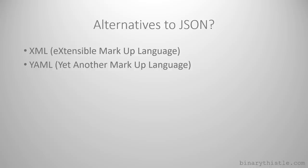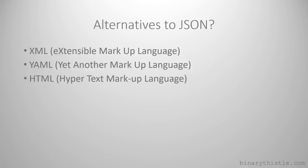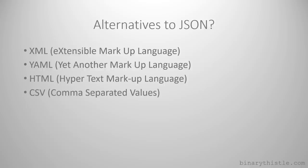YAML - Yet Another Markup Language - I've really only come across it being used as a configuration file. I believe it's a superset of JSON, but if you want to read up more on that, go for your life. I've also put in HTML as a contentious one - it's not really a data transmission alternative to JSON. JSON and XML are used to transmit object data, HTML is really used to transfer HTML pages. And then CSV - Comma Separated Values - it's probably not going to be used where you would choose JSON or XML, but I put it there as a useful positioner since most people have come across CSV.